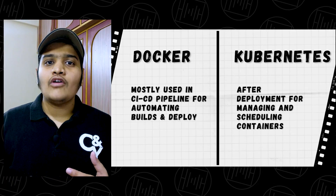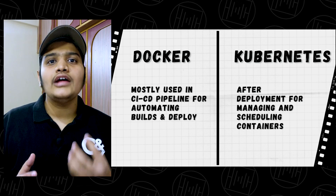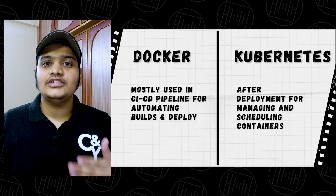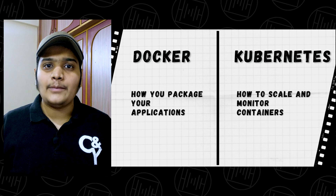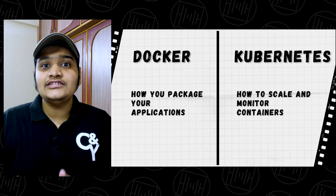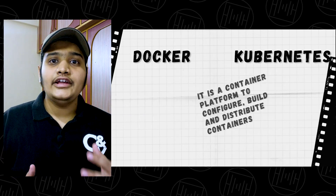Both these technologies are very different but they go hand in hand together. Docker is used at the time of the CI/CD process — at the time of building and automating your application. Kubernetes, on the other hand, comes into the picture after deployments: how your containers will be scaled and managed is handled by Kubernetes. Docker defines how you package your applications, but Kubernetes defines how you scale and monitor those containers in an entire cluster.